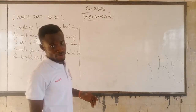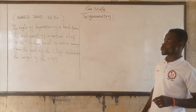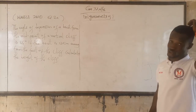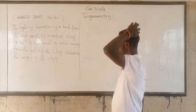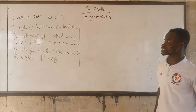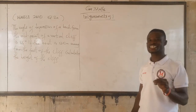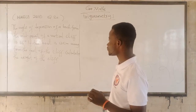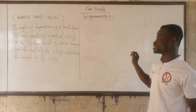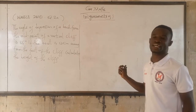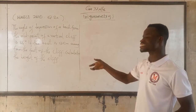Welcome back to this video. In this video, we are going to start with the question that is WASEY 2010, WASEY 2010, WASEY 2a. The question is about depression. The angle of depression of a boat from the midpoint of a vertical cliff is 35 degrees. If the boat is 120 meters away from the foot of the cliff, calculate the height of the cliff.